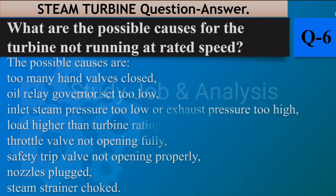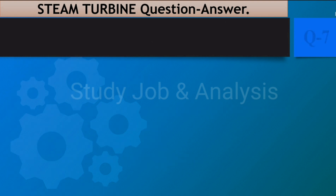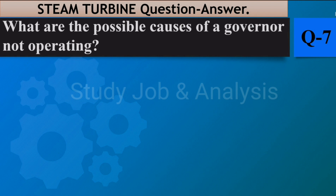Question number six: What are the possible causes for the turbine not running at rated speed? Answer: Too many hand valves closed, oil relay governor set too low, inlet steam pressure too low or exhaust pressure too high, load higher than turbine rating, throttle valve not opening fully, safety trip valve not opening properly, nozzles plugged, or steam strainer choked.